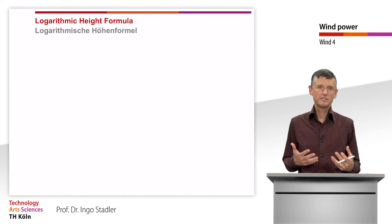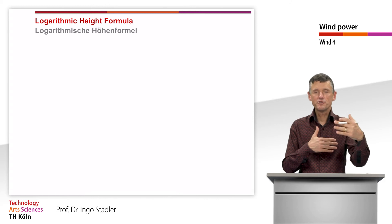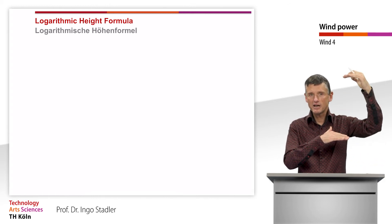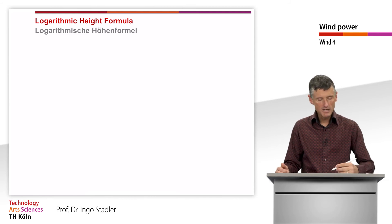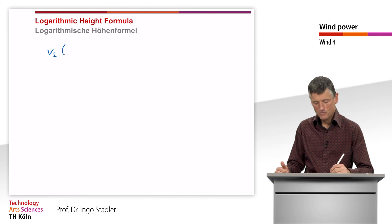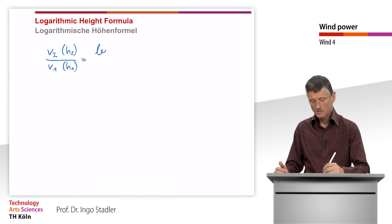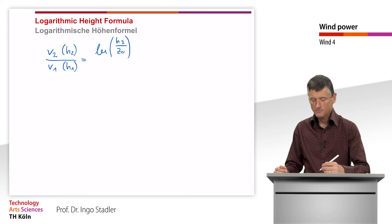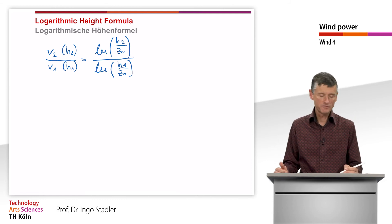When we want to calculate the development of wind speeds — for example we have measurements at a certain height of 10, 20, or 30 meters but are interested in wind speed at a greater height — we can make an approximation using the logarithmic height formula. The velocity v2 at height h2 relates to velocity v1 at height h1 as the natural logarithm of h2 divided by z0, divided by the natural logarithm of h1 divided by z0. By that we at least can have an approximation of wind speeds at different heights.